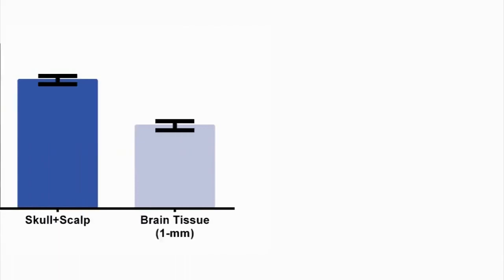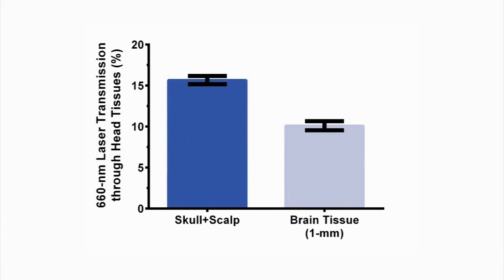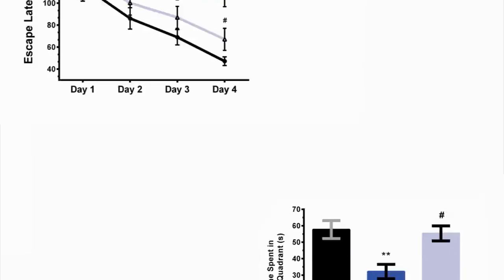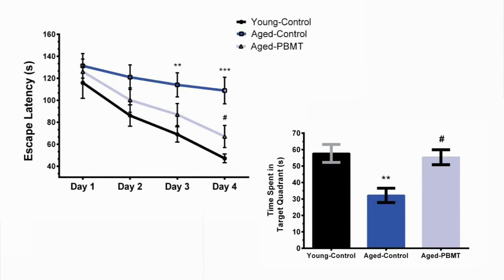Laser transmission data show that approximately 1% of an incident light on the scalp surface reaches 1mm depth from the cortical surface. The results from the Barnes Maze task show an improvement of the spatial memory in the aged mice following two weeks of the transcranial red laser treatment.